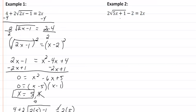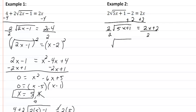Let's take a look at our second example. Again we want to get our radical by itself. So we'll add 2 to both sides first. And so now we have 2 square root of 5x plus 1 equal to 2x plus 2. Divide by 2 and we have the square root of 5x plus 1 equal to x plus 1.